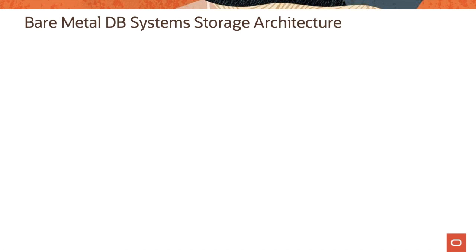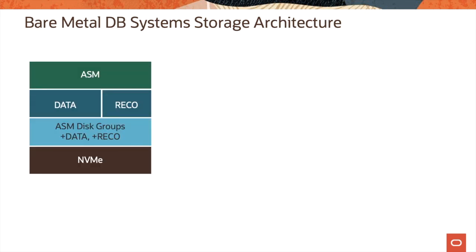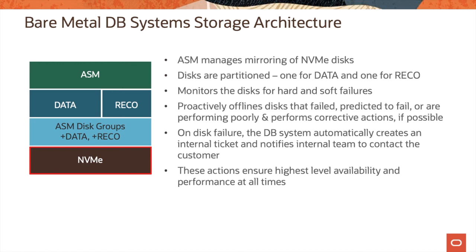Let us now look at the Bare Metal DB systems storage architecture. The bare metal DB systems rely on locally attached NVMe SSD drives. ASM uses these drives to carve out the data and REDO disk groups, and ASM manages the mirroring of the NVMe disks. ASM monitors the disks for hard and soft failures and proactively offlines disks that have failed, are predicted to fail, or are performing poorly, and performs corrective actions if possible. In the case of disk failure, the DB system automatically creates an internal ticket and notifies the internal team to contact the customer. These actions ensure the highest level of availability and performance at all times.